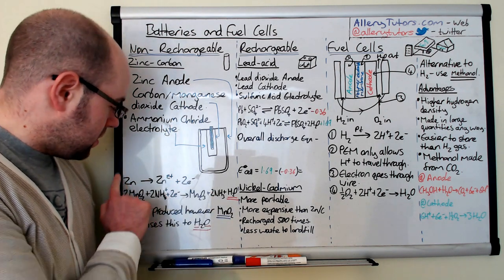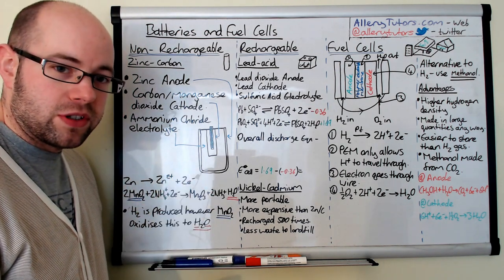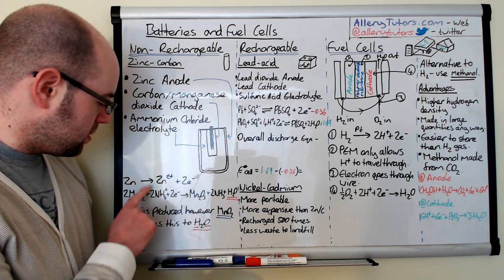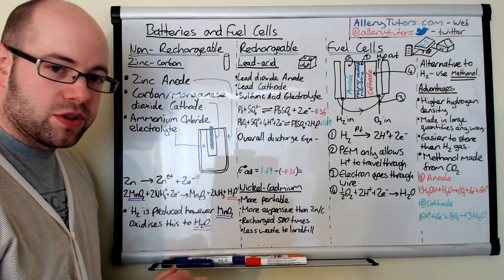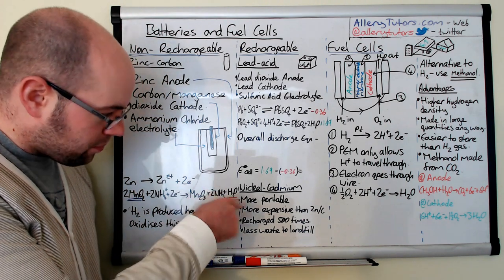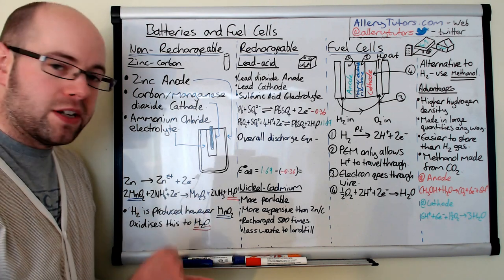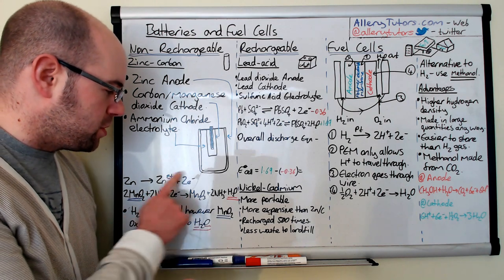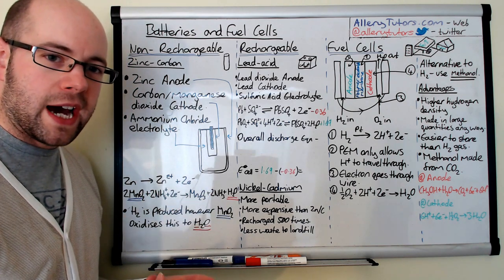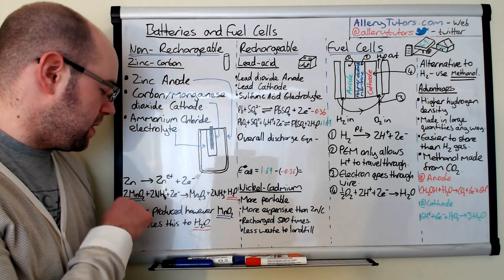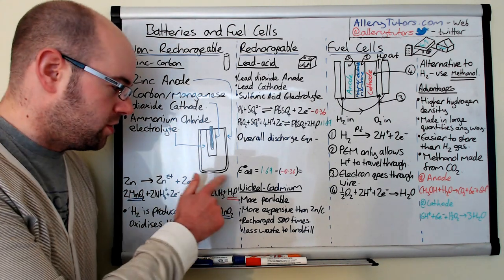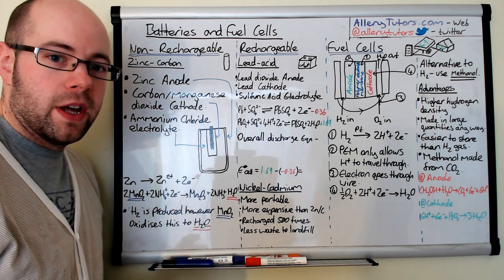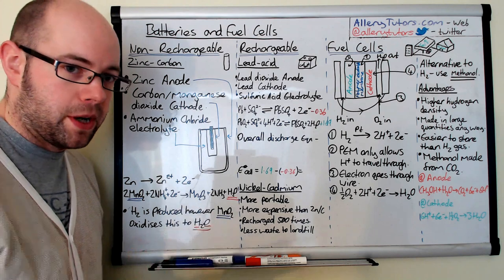So the two half equations are: zinc forming Zn²⁺ plus two electrons — this is the oxidation process — and the reduction process underneath: manganese dioxide producing water and dimanganese trioxide. Normally, when ammonium is converted to ammonia, hydrogen gas is produced. That hydrogen gas is very quickly oxidised by the manganese dioxide and turns into water. This means the reaction is not reversible, so it's a non-rechargeable battery — once used up, it can't be used again.